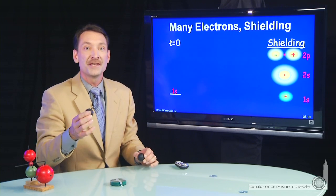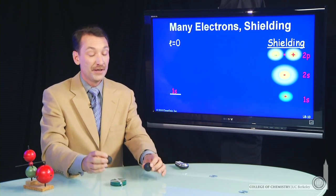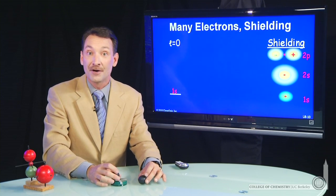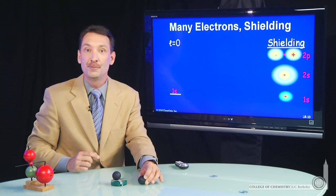So even within the same principle quantum level, if you have n equal 2, you have both 2s and 2p electrons. The 2s electron will be an effective shielder of the 2p.